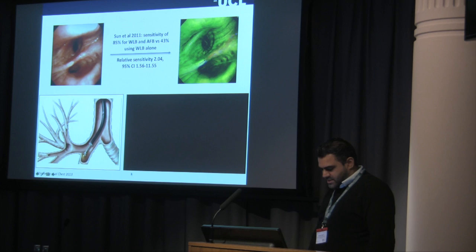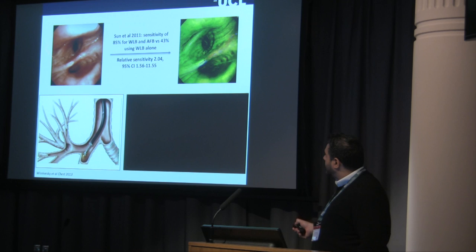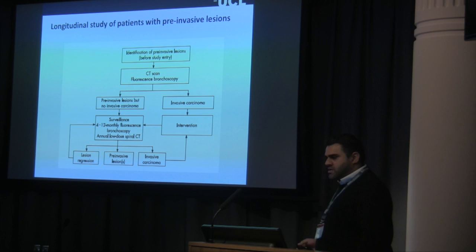Because these lesions occur in the central airways, autofluorescence bronchoscopy is the most useful way of detecting them. You can see here what normal mucosa looks like in white light, and when we use a 400 nanometer wavelength, a fluorescent lesion becomes visible — that is where we target our biopsies and where we see pre-invasive disease.